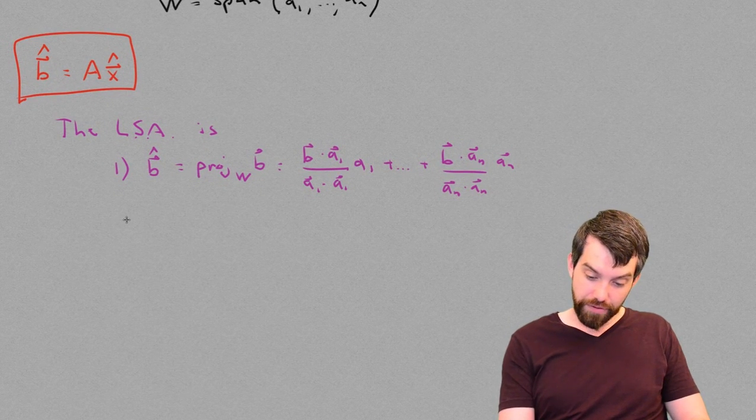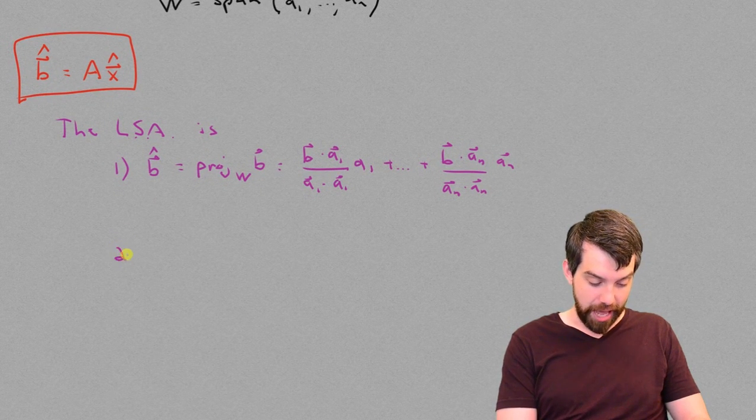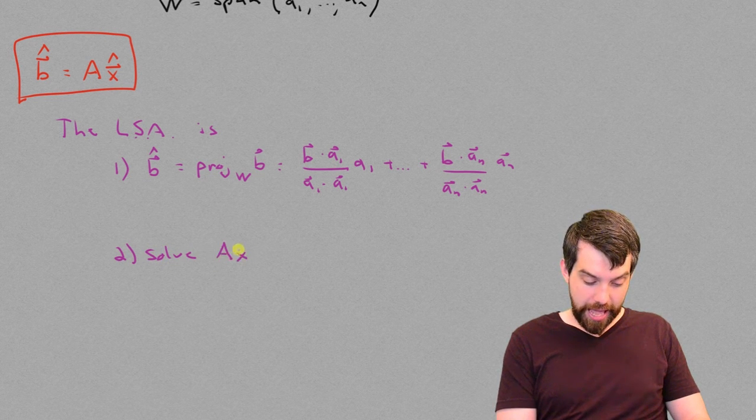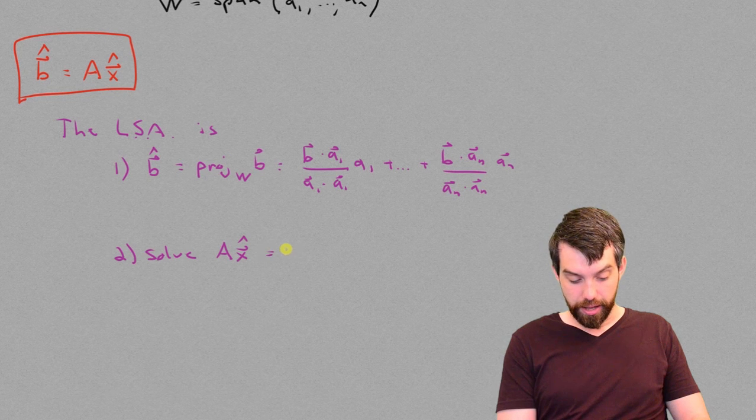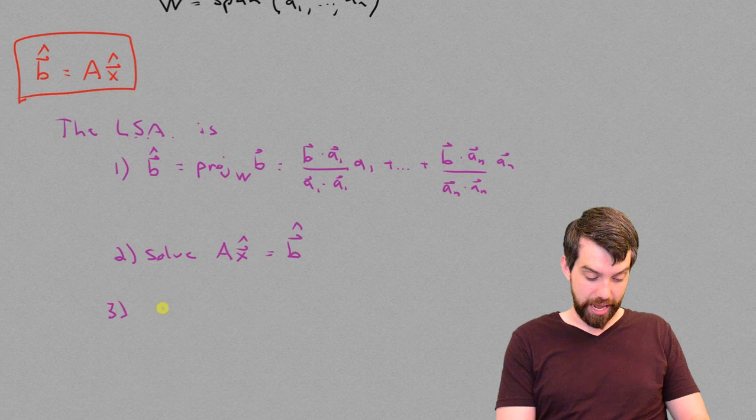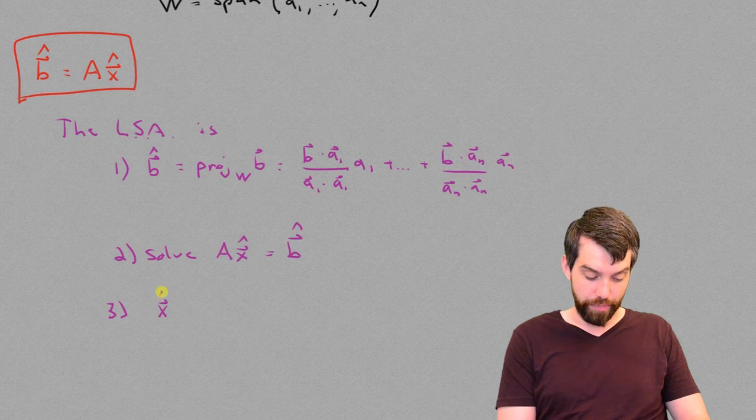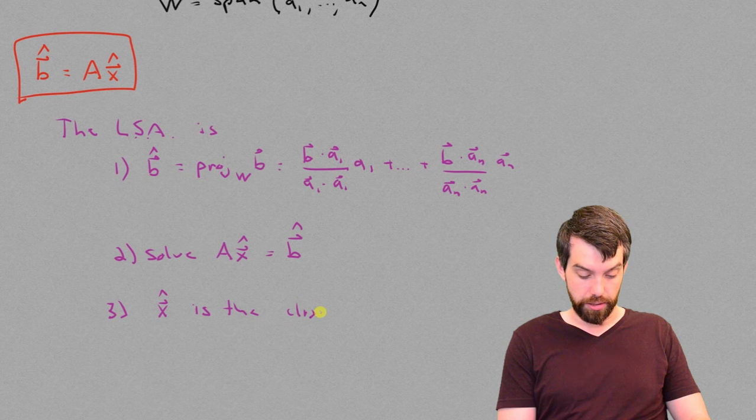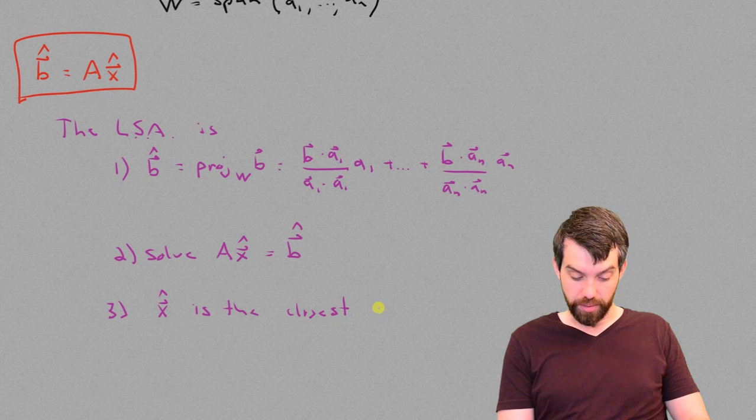And then, after I have this, my second step is to solve for ax vector hat is equal to b vector hat. And then, finally, we'll say that whatever vector that you get out of that process is the closest approximation.